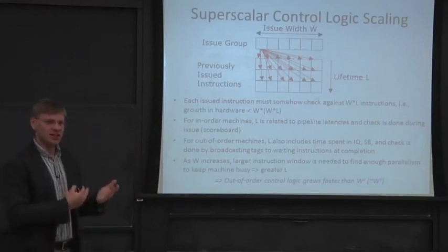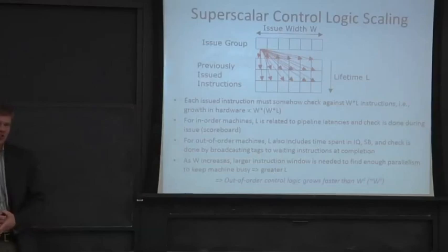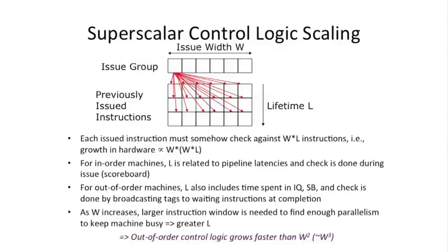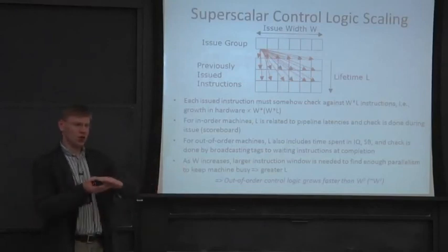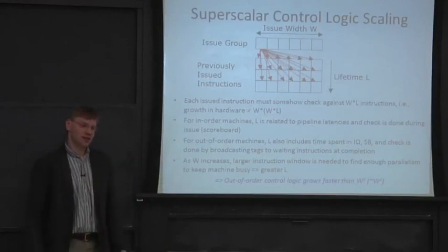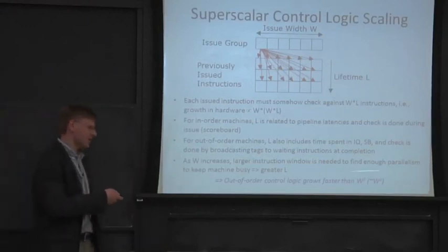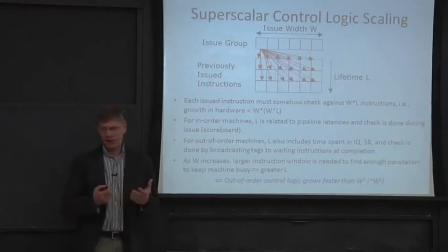The point is that this is a lot of hardware complexity, growing with the width of the machine. And as you increase the width — say from a 3-wide to a 4- or 5-wide machine — you typically also need a larger instruction queue or instruction window to find enough parallelism to keep the machine busy. So as you go wider, you also have to make the instruction queue deeper to feed your functional units. That causes these blow-up factors, and you can build these things, but they're hard. So are there alternatives?